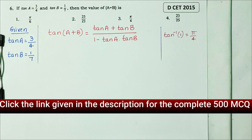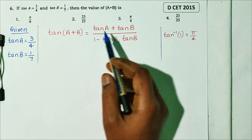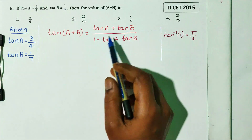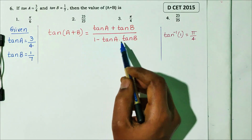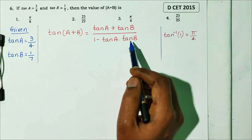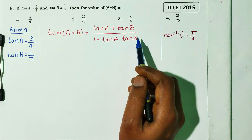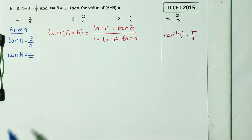So we use the formula: tan(A + B) equals tan A plus tan B divided by 1 minus tan A times tan B. Substitute the given values.